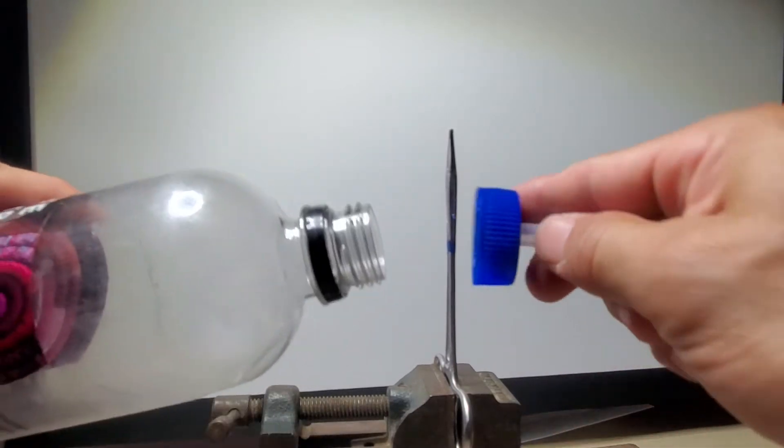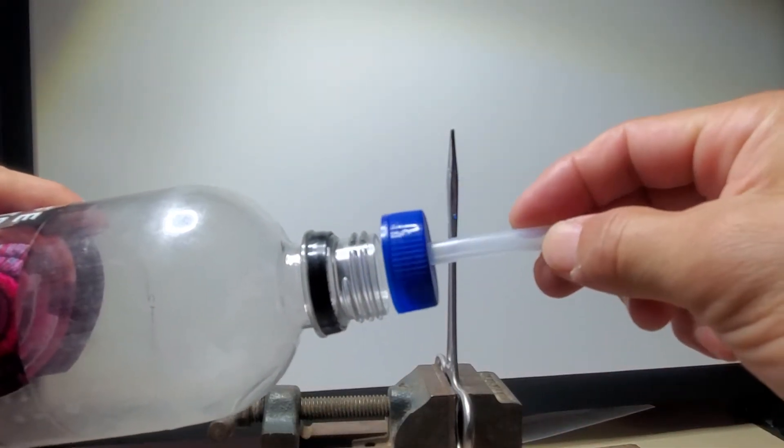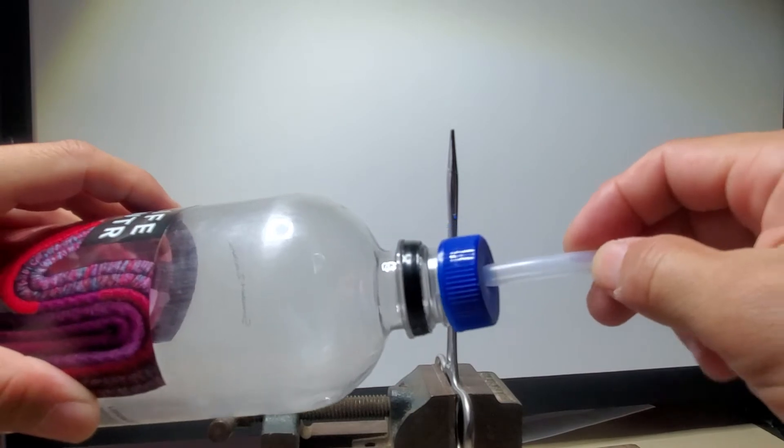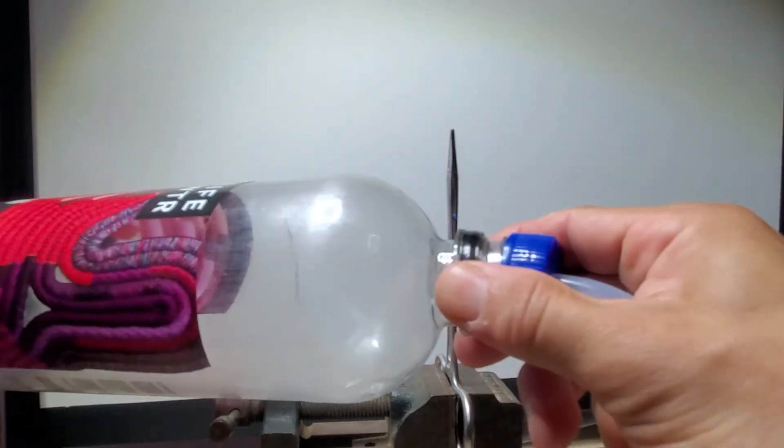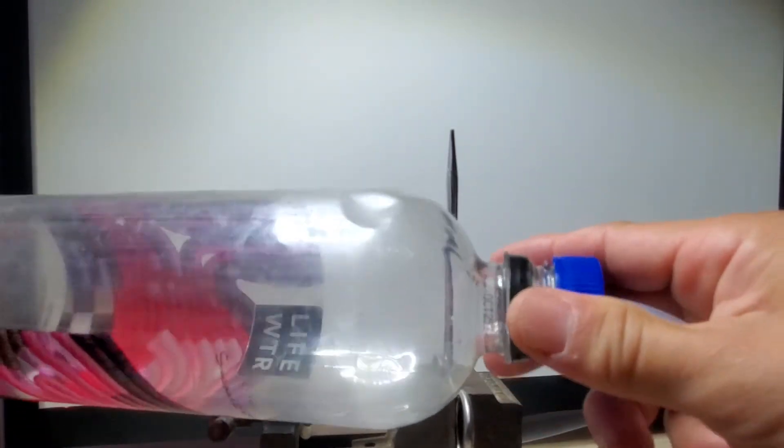Okay, welcome to another episode of Stuff for Your Stuff. Here today we're going to make an attachment for your water hose that goes directly onto your water bottle.